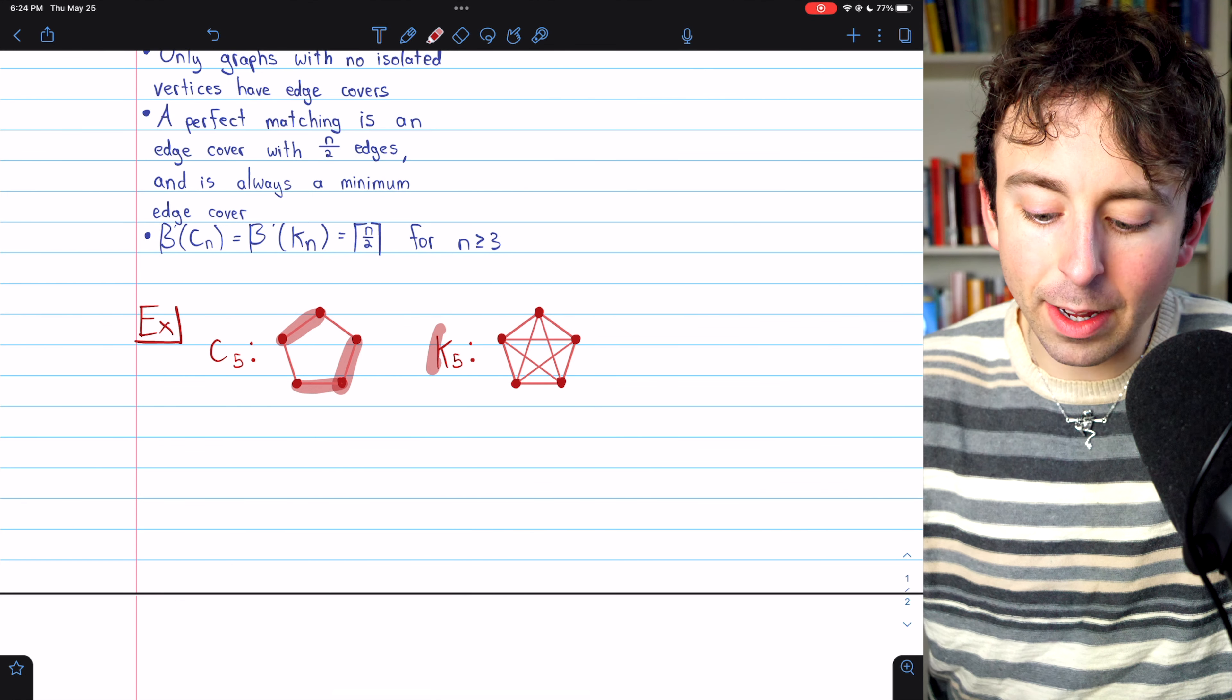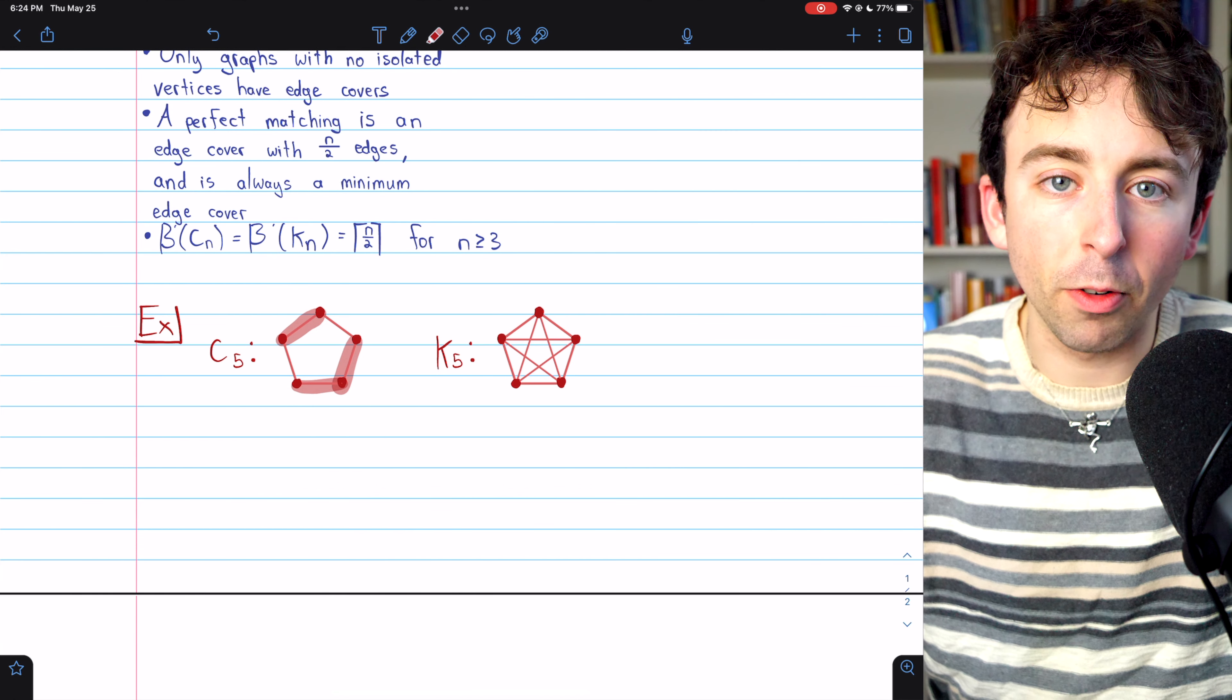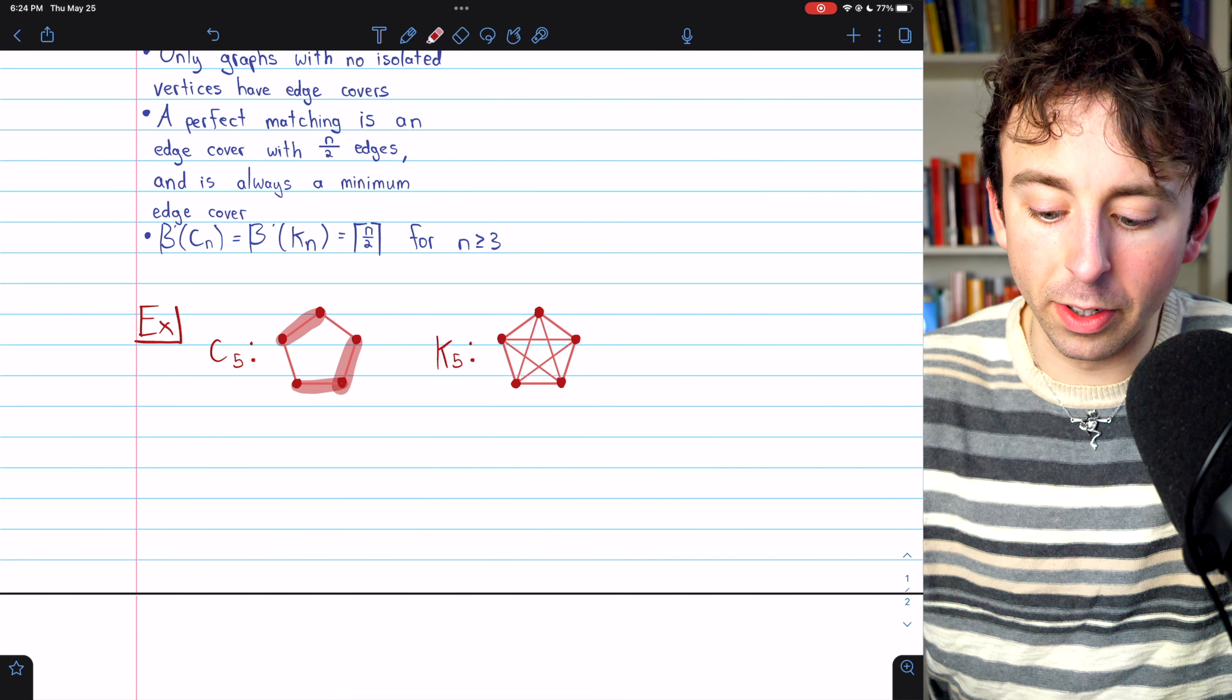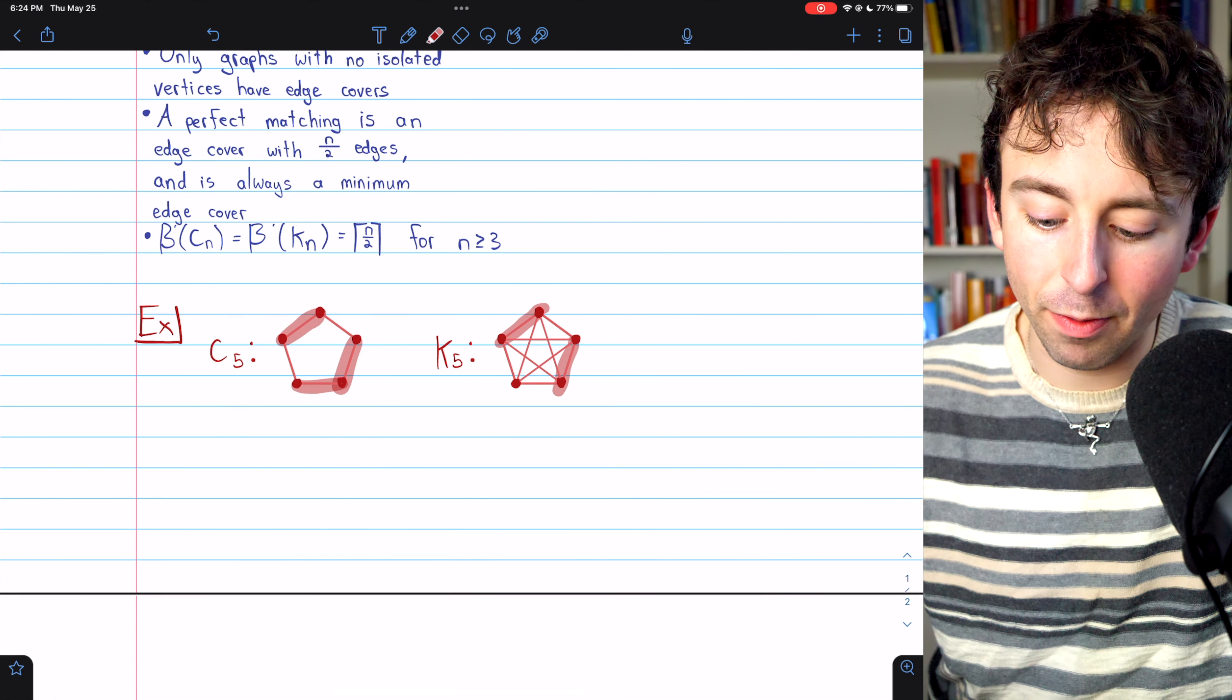It's the same for a complete graph on five vertices. All those additional edges do not allow us to cover the graph any quicker. Each edge can at most cover two vertices. So we're still going to need this edge,